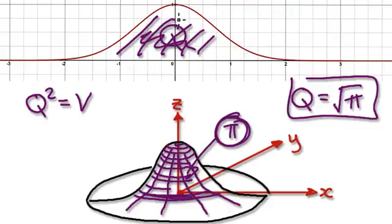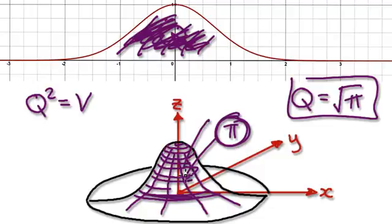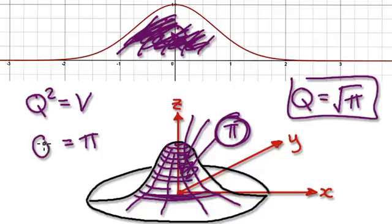As it turns out, when you square the area underneath the graph, it equals the volume of this solid here. And the volume of this solid here is pi.